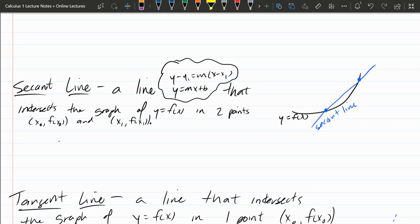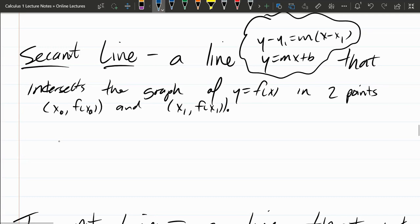Here, the secant line, it's a line that intersects the graph in two points, and these two points will have an xy value. So the first one here, I just called it x0, f of x0. Sometimes the f of x0 will be called y0. Sometimes you're just given two x values, and you have to compute your y values by plugging them into the function. And the other one, similarly, x1, f of x1.